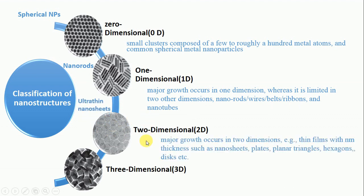Ultrathin nanosheets are two-dimensional nanoparticles and their major growth occurs in two dimensions. For example, thin films with nanometer thickness such as nanosheets, plates, planar triangles, hexagons, and disks.